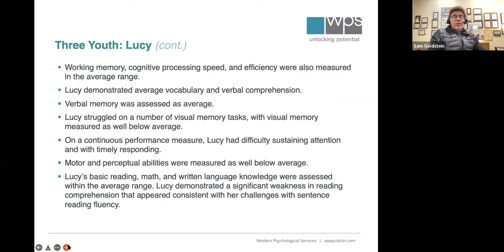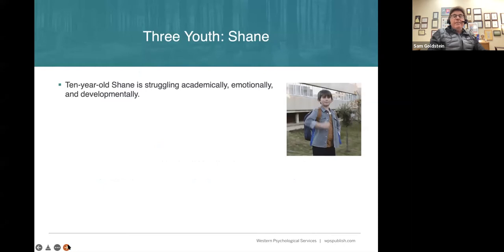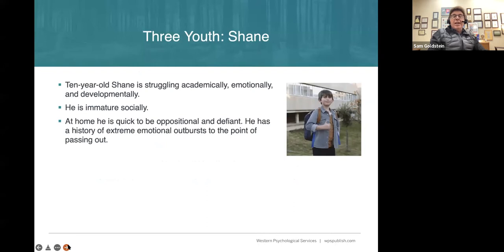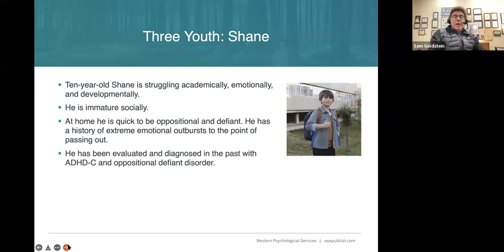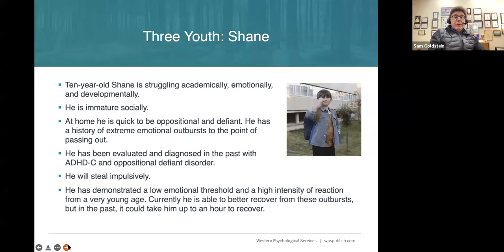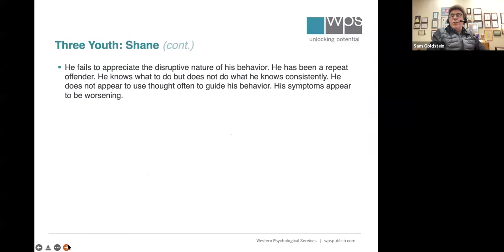Here's a second child — a boy who was immature socially, quick to be oppositional and defiant, with long emotional outbursts that at a younger age would lead to him actually passing out. He'd been diagnosed with combined type ADHD and ODD. He would steal impulsively. He had what I refer to as a low emotional threshold and a high intensity of reaction. He could recover from these outbursts, but sometimes it took him up to an hour to do so. He didn't understand the disruptive nature of his behavior — he thought his problems were caused by everyone else. He was rigid, defiant, and taking multiple classes of psychiatric medication but still struggling.